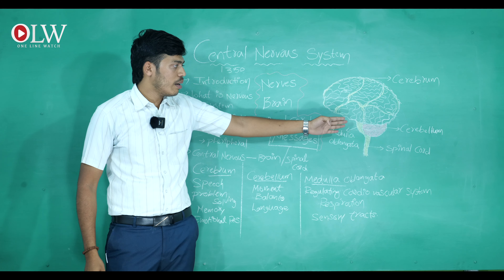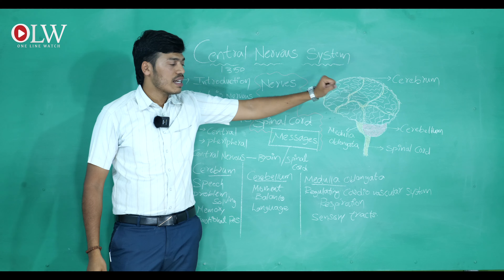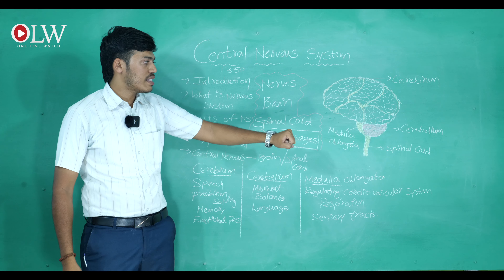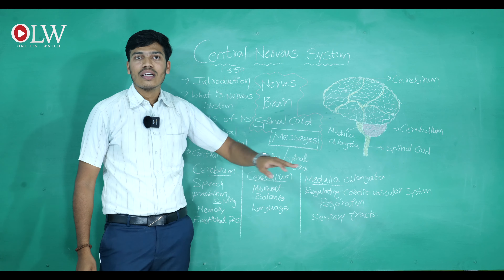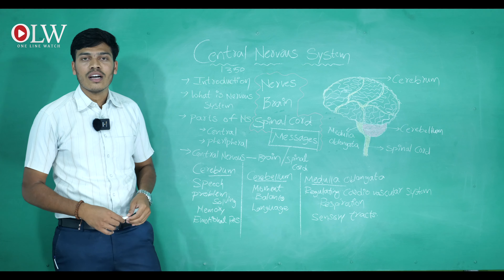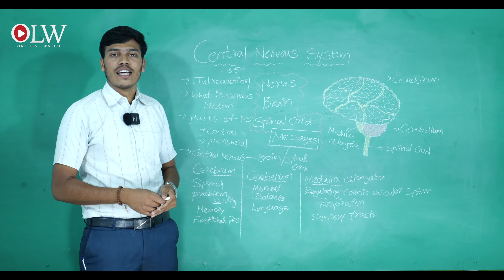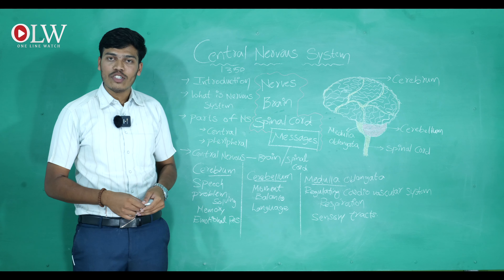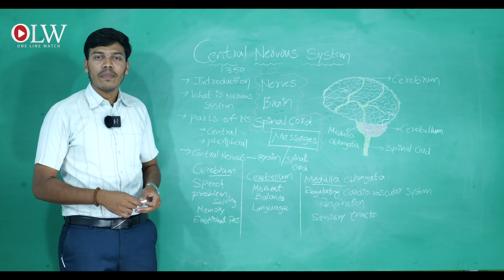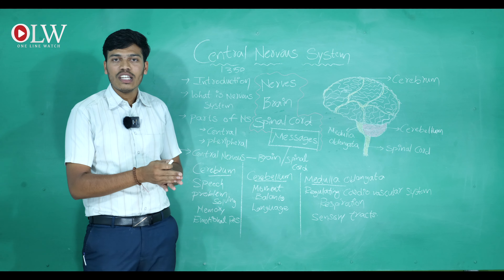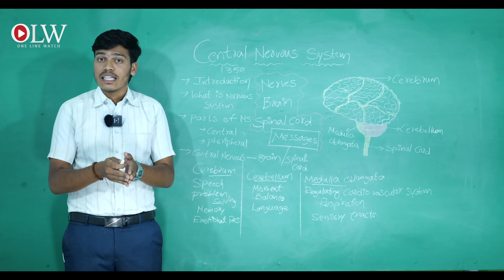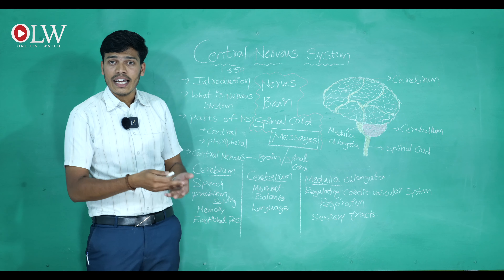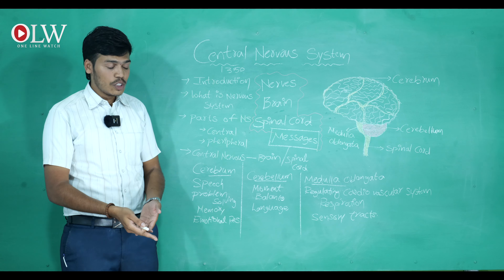The brain consists of mainly three parts: the first is the cerebrum, the second is the cerebellum, and the third is the medulla oblongata. The central nervous system is made up of the brain and spinal cord combined together.